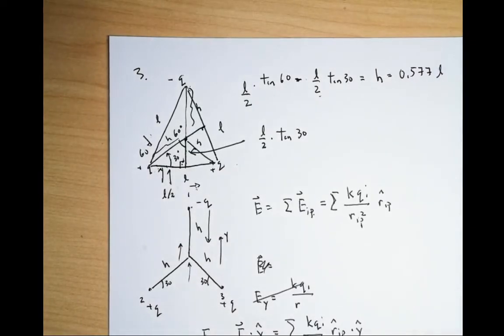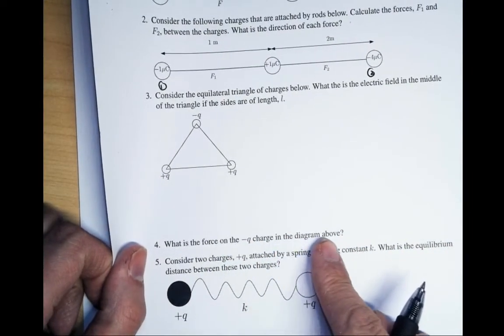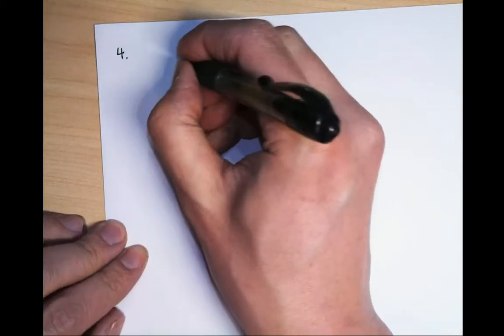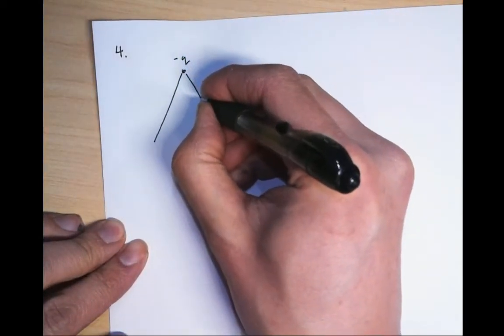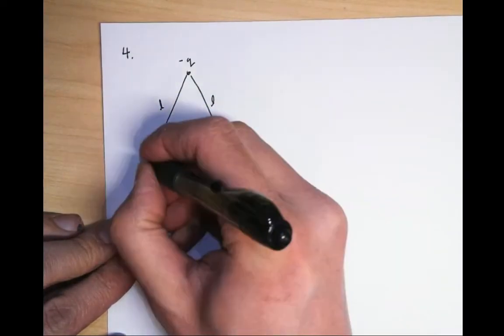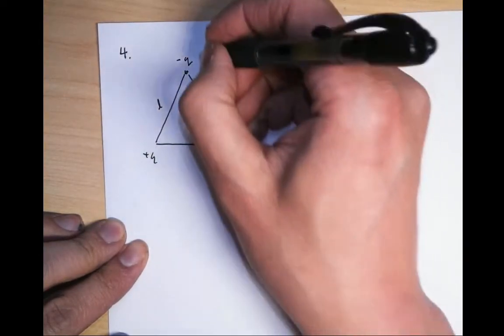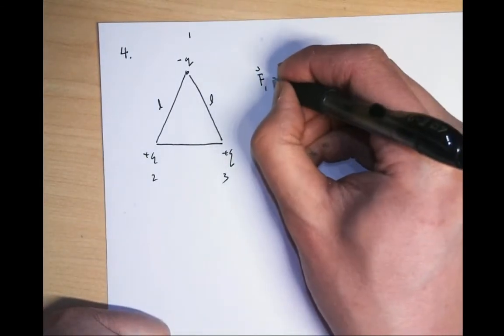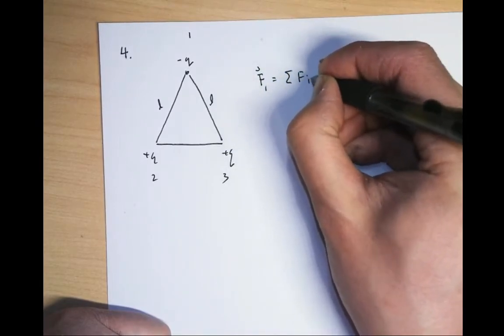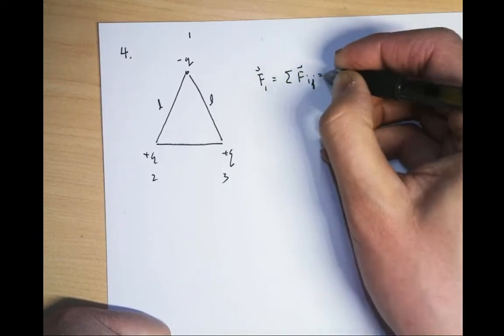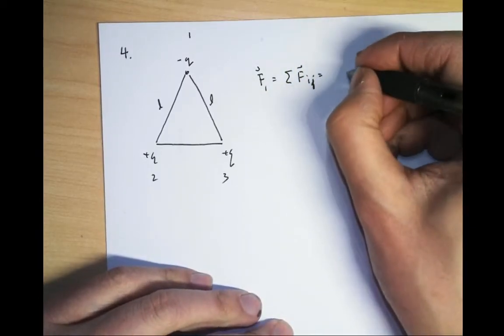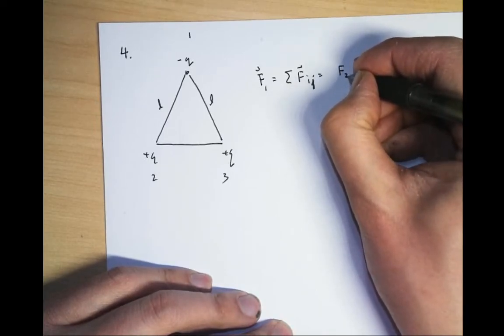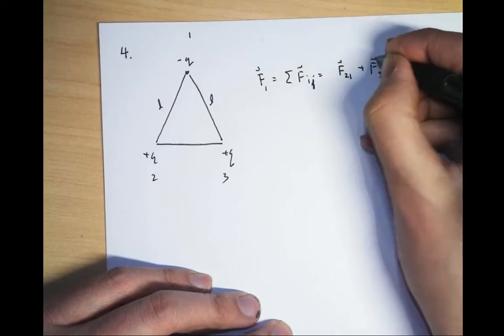Now problem 4: what is the force on the minus Q charge in the diagram? We have the same equilateral triangle — minus Q at vertex 1, plus Q at vertex 2, plus Q at vertex 3, all sides length L. The force on charge 1 is the sum of the force of 2 on 1 plus the force of 3 on 1.